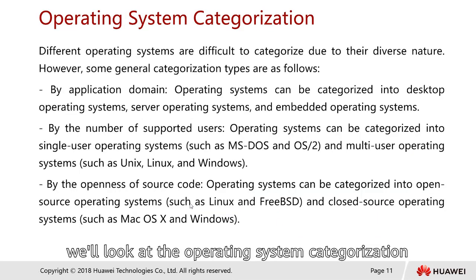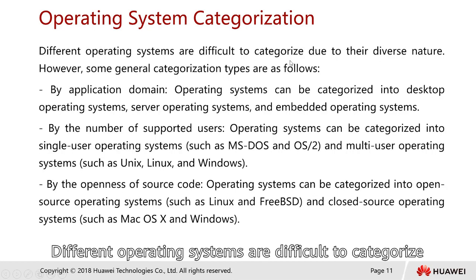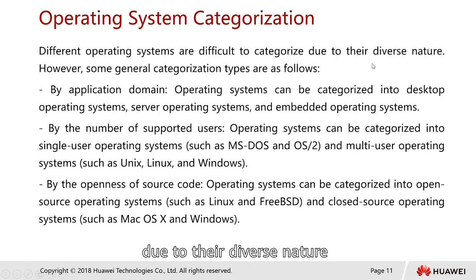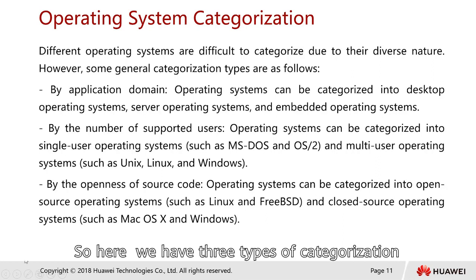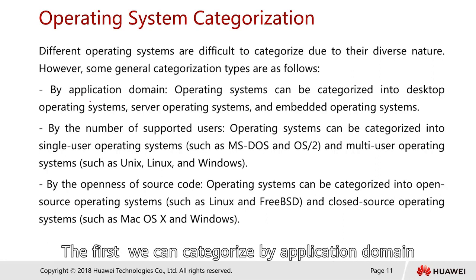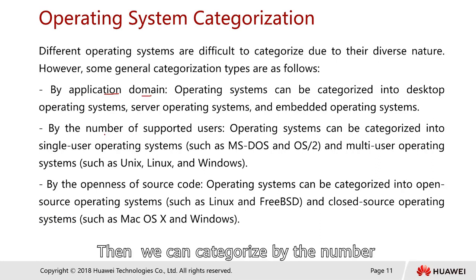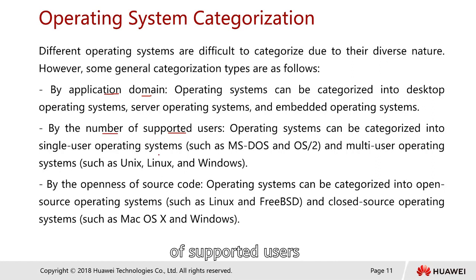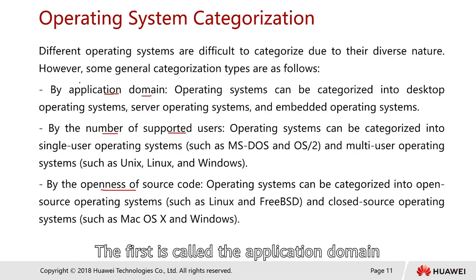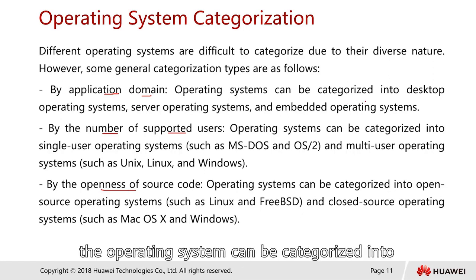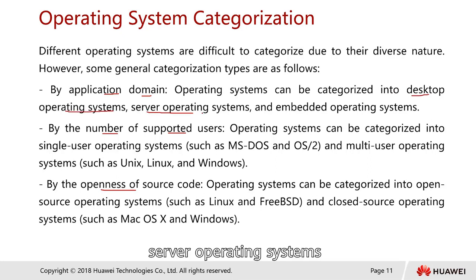Next, we look at operating system categorization. Different operating systems are difficult to categorize due to their diverse nature. However, some general categorization types are as follows. We can categorize by the application domain, by the number of supported users, and by the openness of the source code. By application domain, the operating system can be categorized as desktop operating system, server operating system, and embedded operating system.